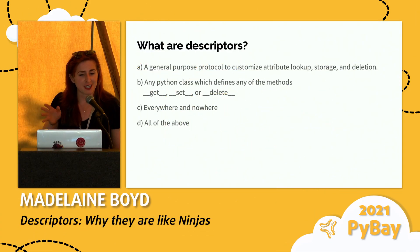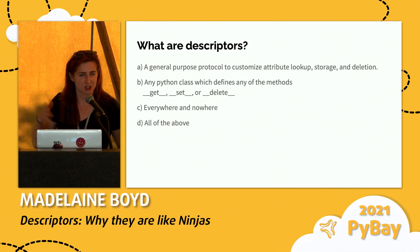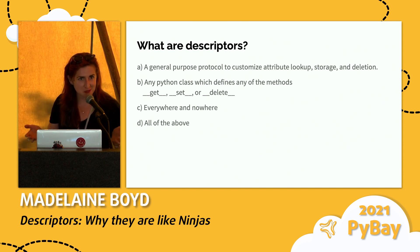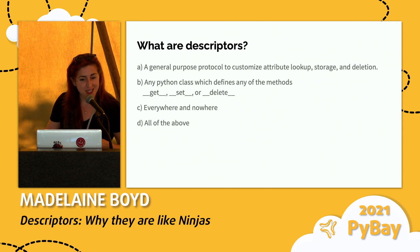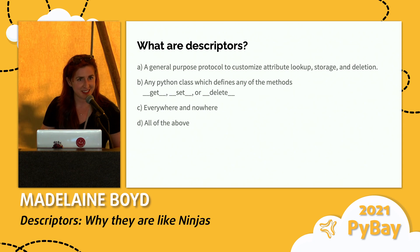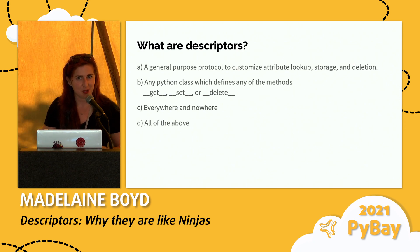For those of you, can you guess what a descriptor is? Is it A, with a show of hands, a general purpose protocol to customize attribute lookup, storage, and deletion? B, a Python class which defines any of the methods get, set, or delete? C, everywhere and nowhere? Or D, all of the above?